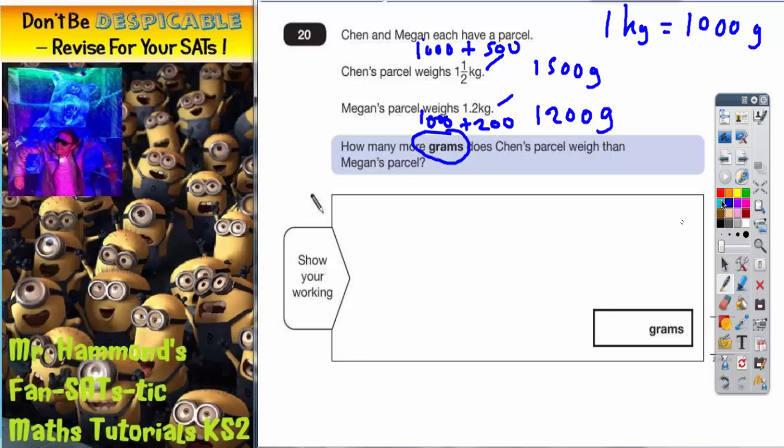Now we can go back and read the question. It says, how many more grams does Chen have than Megan? Well, Chen's got 1,500, Megan's got 1,200. So how many more has she got? Do a quick subtraction, find the difference. Some of you might be able to do it in your head.